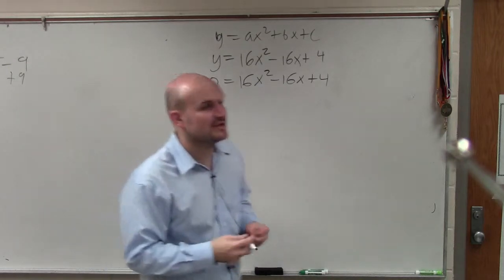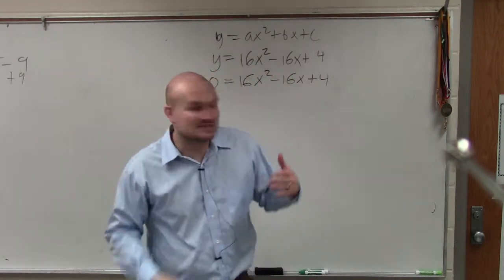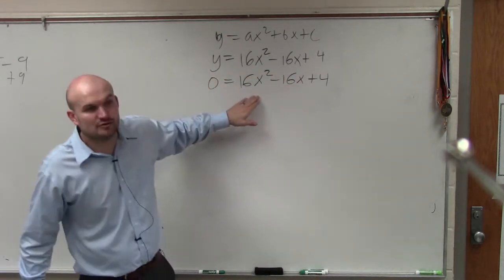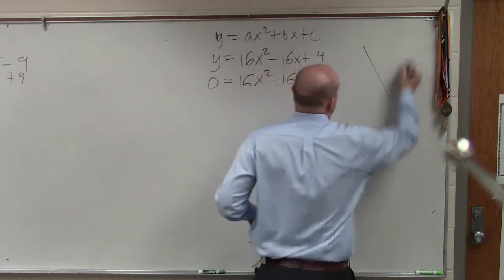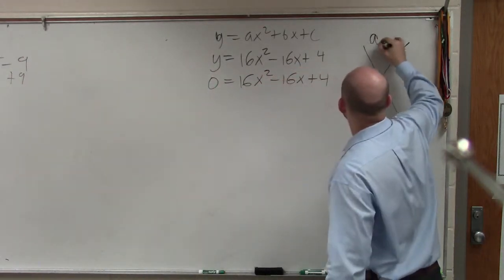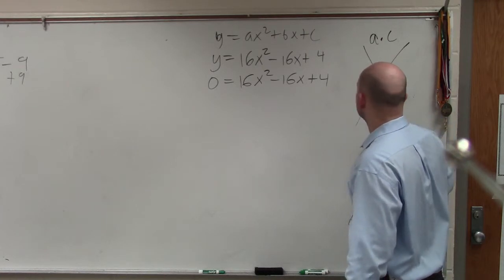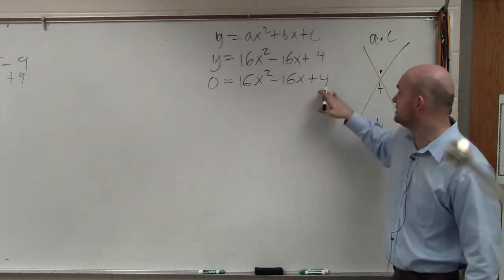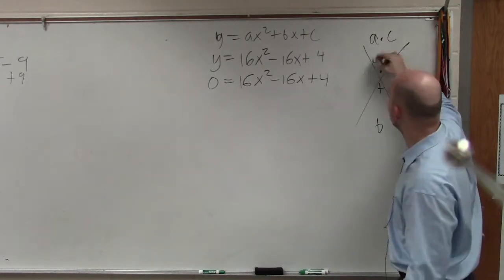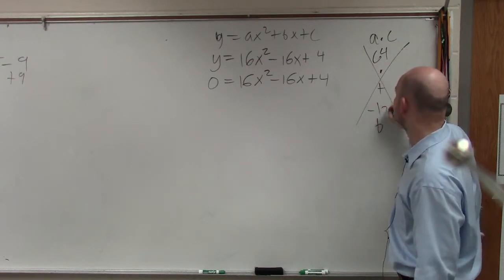The first thing that some of you guys might notice is saying, oh, crap, my a is not equal to 1. So if I was going to do the long method, I'd have to do a times c, and then I'd have to do b, right? So a times c, in this case, would be 32, 64, and then negative 16.